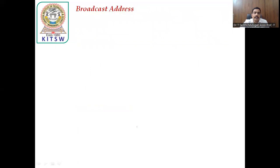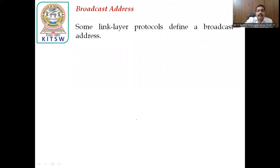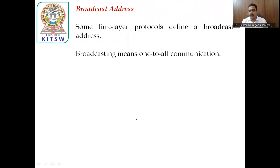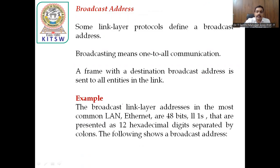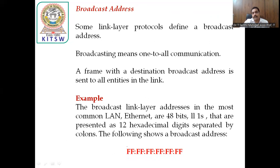Finally, broadcasting. Broadcasting means one-to-all communication — one person sends to all the people. The link layer protocol defines broadcast addresses. A frame with a destination broadcast address is sent to all entities in the link. It is represented with the same 48 bits and 12 hexadecimal numbers, but all numbers are ones — total all ones are used. So that is considered as the broadcast address. All ones means automatically the values become F, so all values being F means that is a broadcast address.